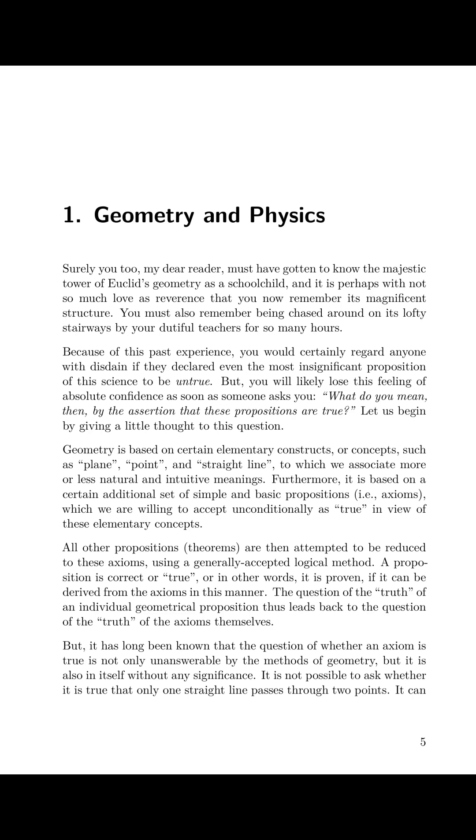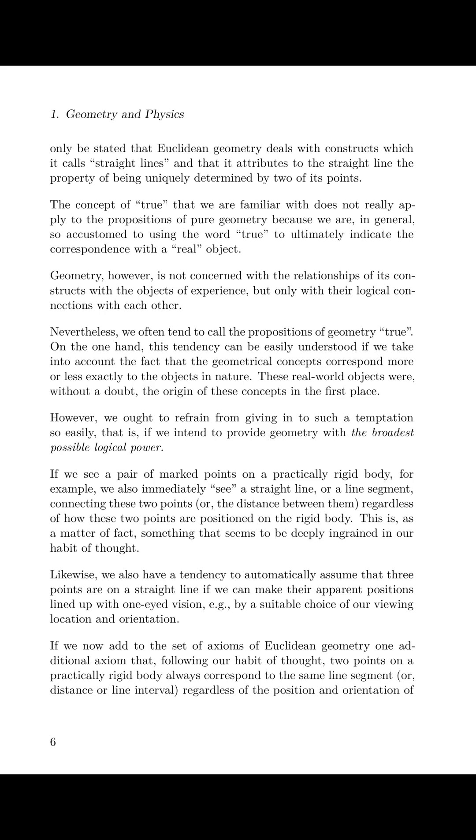But it has long been known that the question of whether an axiom is true is not only unanswerable by the methods of geometry, but it is also in itself without any significance. It is not possible to ask whether it is true that only one straight line passes through two points. It can only be stated that Euclidean geometry deals with constructs which it calls straight lines, and that it attributes to the straight line the property of being uniquely determined by two of its points. The concept of true that we are familiar with does not really apply to the propositions of pure geometry because we are, in general, so accustomed to using the word true to ultimately indicate the correspondence with a real object.